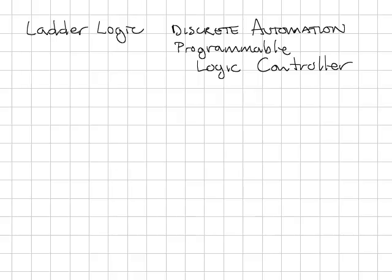Ladder logic is a simple form of discrete automation. In discrete automation, the inputs and outputs are digital I.O. They're just on or off values. Most discrete automation systems are run using what's called a programmable logic controller, referred to as PLC. And the simplest form of that is ladder logic.